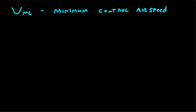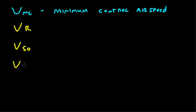For example, V rotate. Or V SO — stalling speed in the dirty configuration. Or if you're in a jet, V1, commit speed. Or V flaps extend. So VMC is just a speed, just like any of these other speeds.